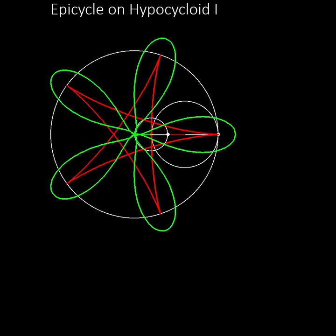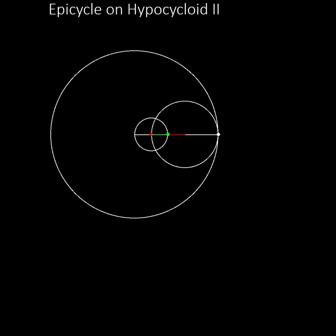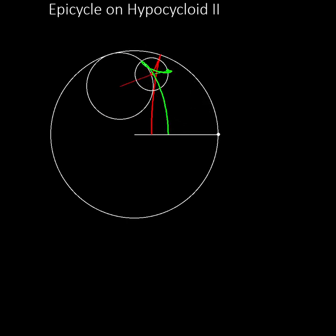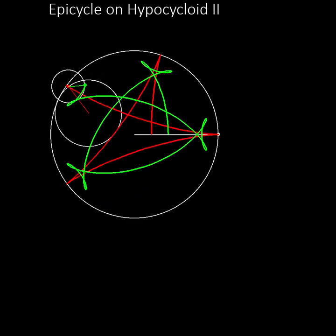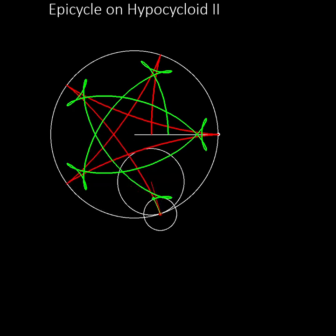As well as moving the pen in or out along a radius of the epicycle wheel, we can also move its initial position around the circumference of the epicycle wheel. For example, if we move our pen by 180 degrees, so it starts on the opposite side of the epicycle wheel, we get a different pattern based on the same hypocycloid curve.